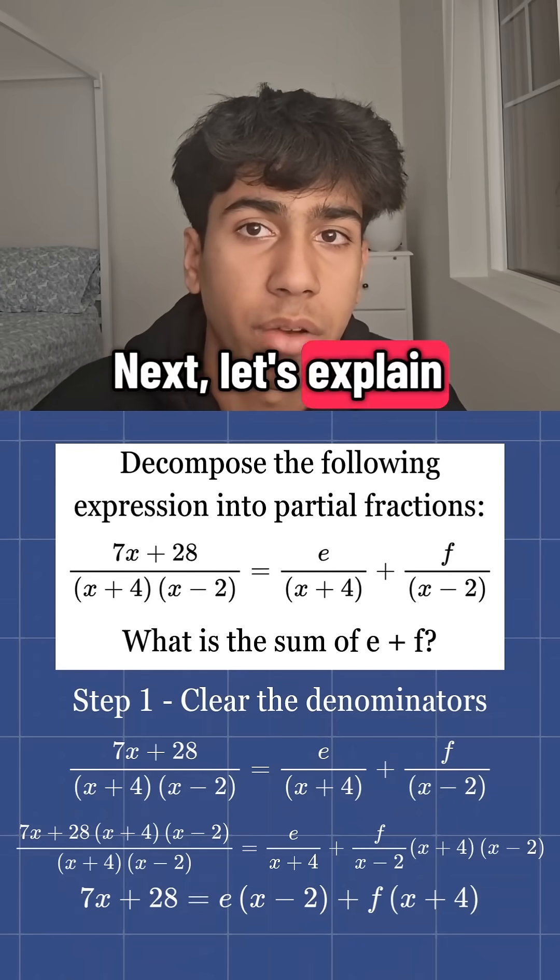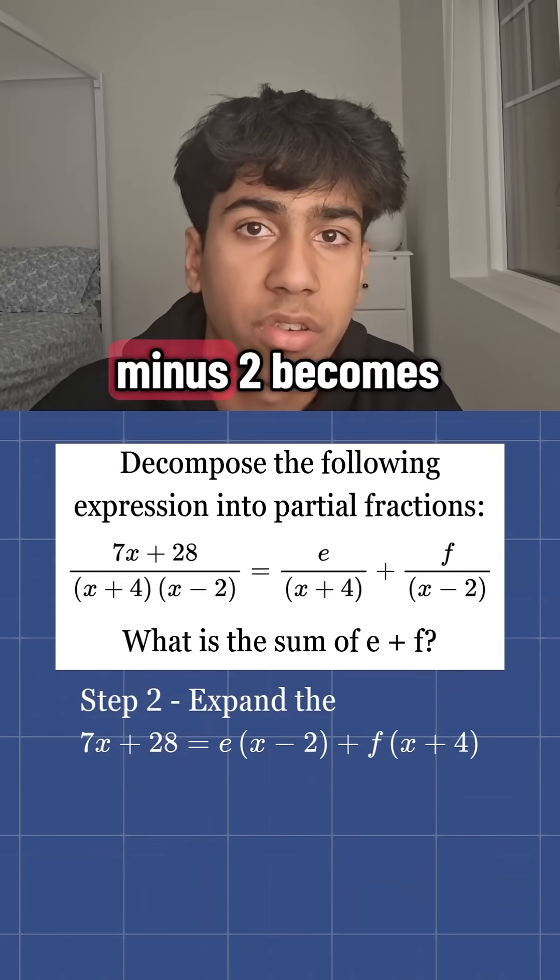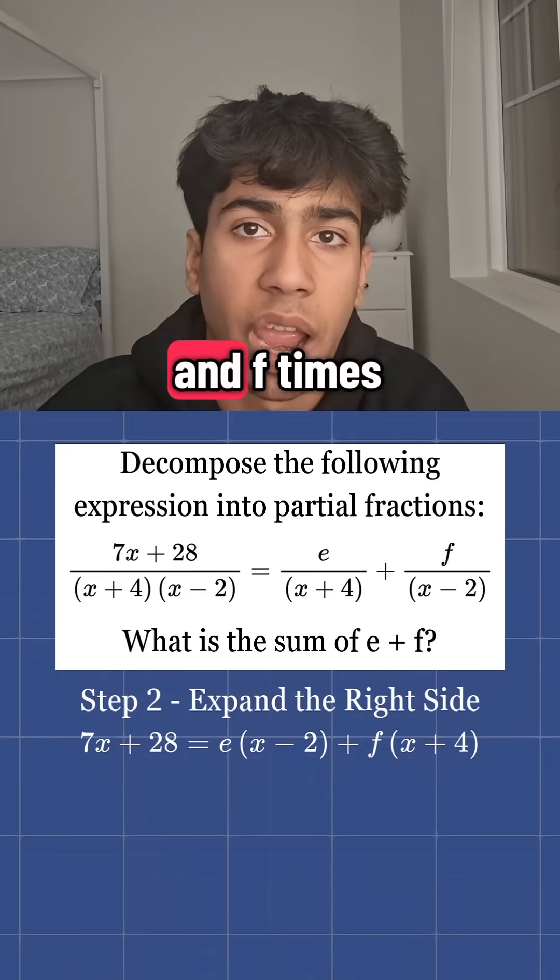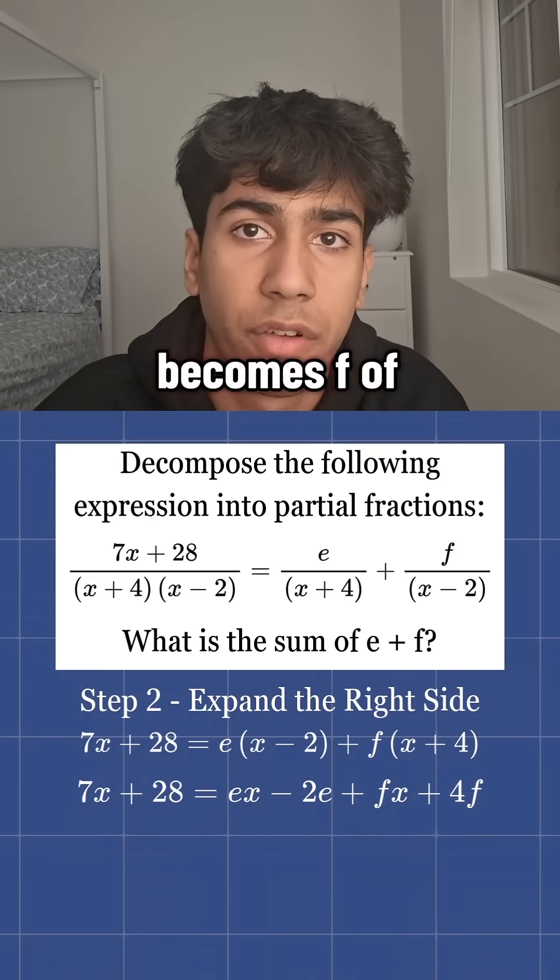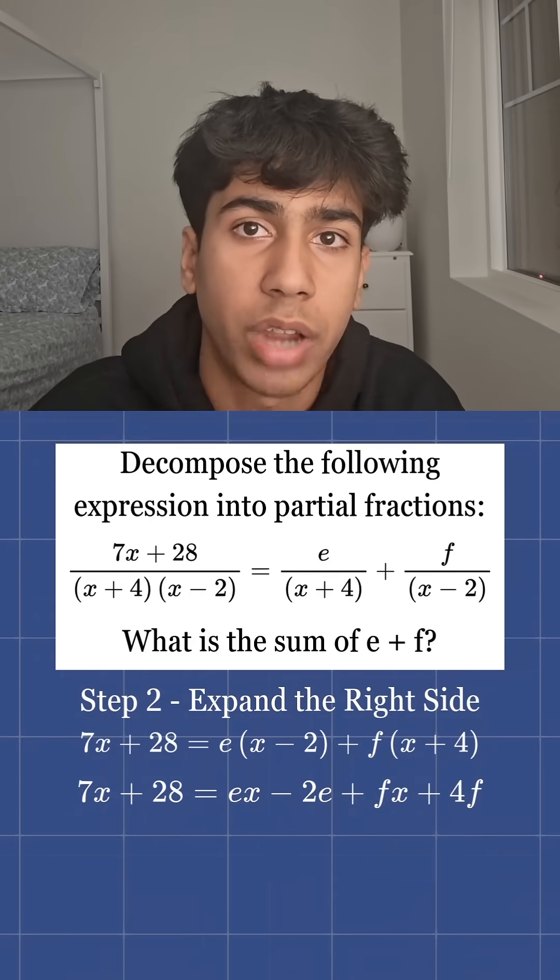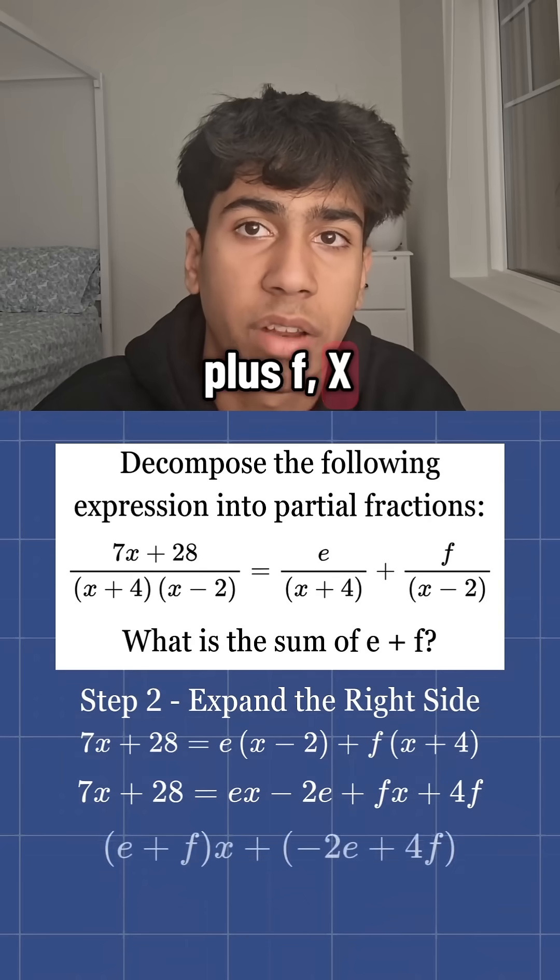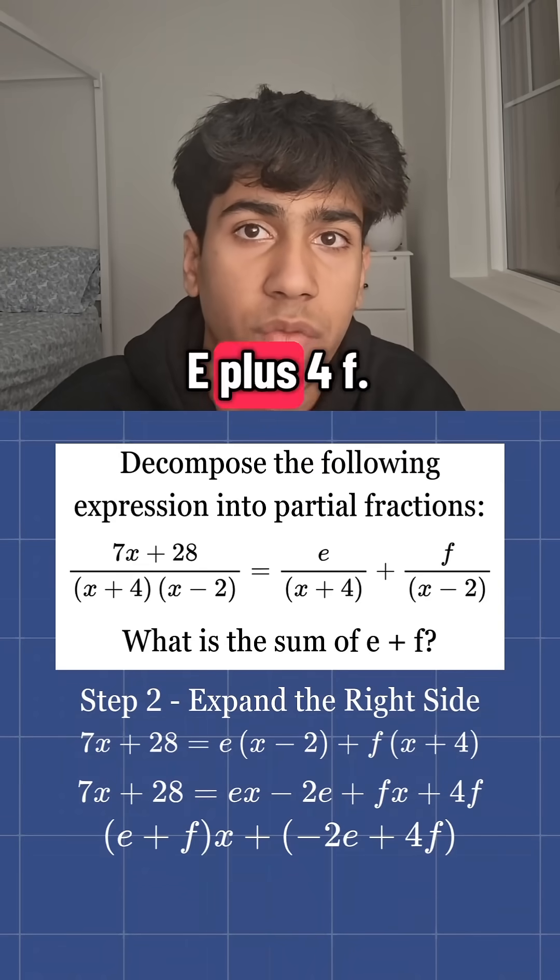Next, let's expand the right side. E times x minus 2 becomes Ex minus 2E, and F times x plus 4 becomes Fx plus 4F. Together, that's E plus Fx plus negative 2E plus 4F.